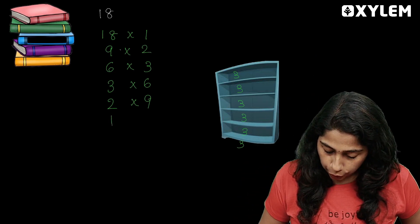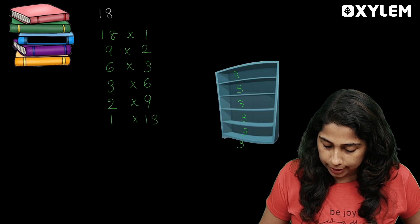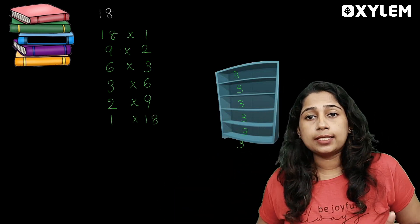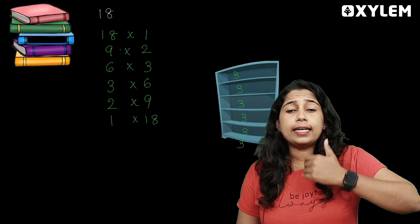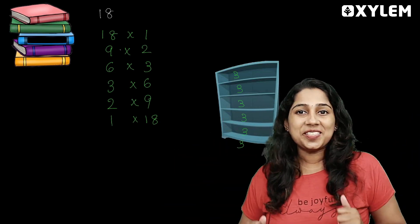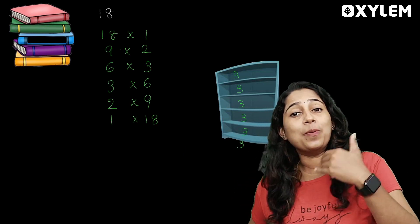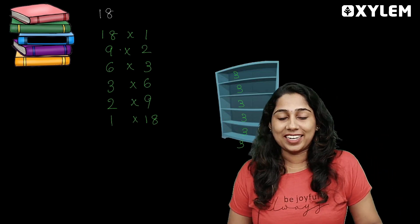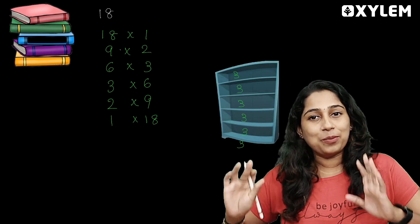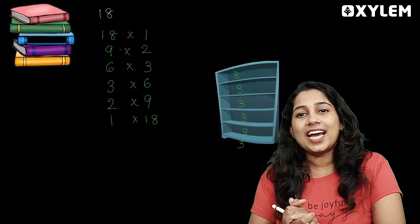One shelf, eighteen books. There are different types of arrangements. Three books on one shelf. The first arrangement. Three books, one book. These are all ways to arrange 18 books equally.